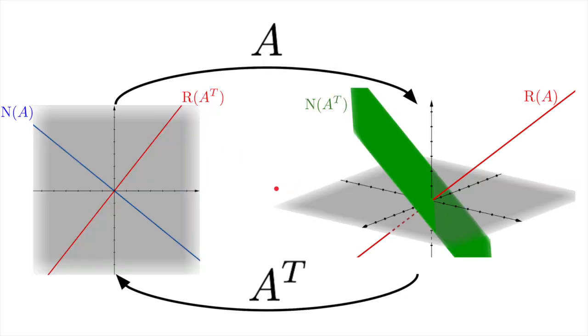In the abstract, the four fundamental subspaces are a way to divide up the input and output space of a linear transformation. There are the parts that are transformed, the ranges in red, and the parts that are thrown away, either squished to zero in the null space, or are orthogonal to what can be output, the null space of the transpose.